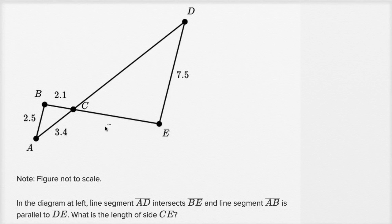In the diagram at left, I drew it up here above, or I pasted it up here, line segment AD intersects BE, and line segment AB is parallel to DE. What is the length of side CE? So we want to figure out the length of side CE.